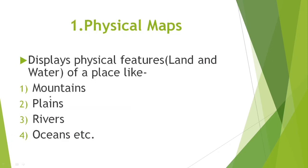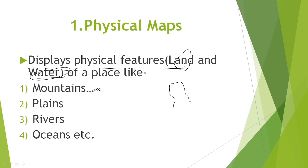Physical map displays physical features of land and water. In other words, it shows plains — called 'Somaanha' — rivers, and oceans.